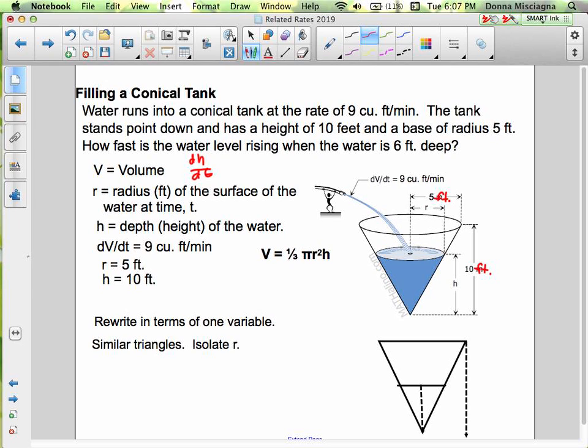We want to find dh/dt and we have a problem. We have three variables: volume, r radius, and h height. I know dV/dt, I'm looking for dh/dt. What do I do about dr/dt? You cannot have more than one unknown in an equation, so you're going to have to set up similar triangles to find the relationship between those two variables so you can rewrite one in terms of the other.